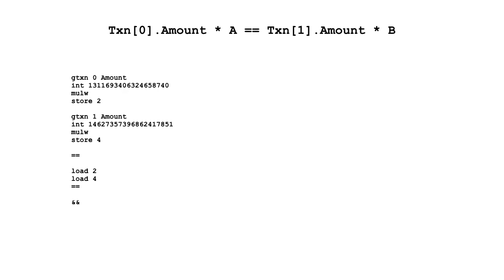Here's another example expression. In this case, we have a two-transaction atomic group, and transaction zero amount times A equals transaction one amount times B. This is equivalent to checking that the ratio of the two amounts is equal to the ratio of B to A. But if we did this the simplest way, we could have overflow. Overflow in many of Teal's mathematical operations causes a panic that fails the program and thus rejects the transaction. So here we're using the mulw (multiply wide) instruction, which takes two 64-bit integers, multiplies them out, and keeps all 128 bits of result.